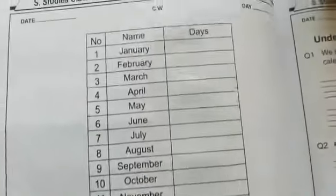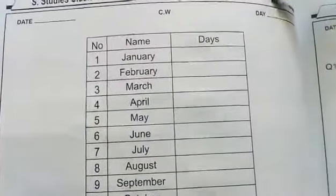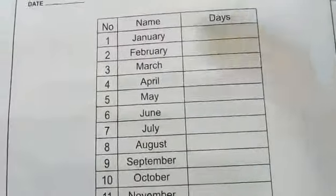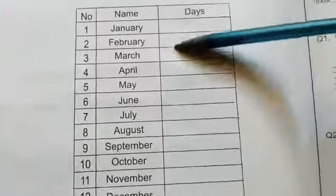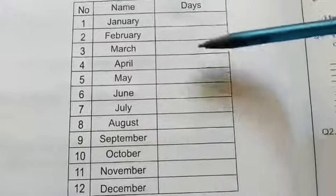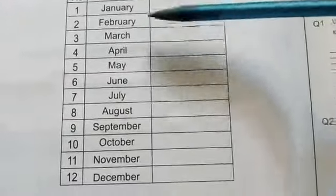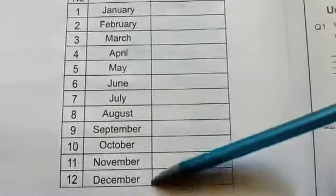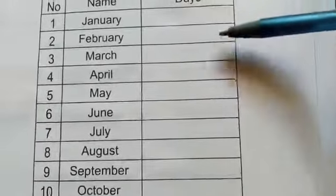Now students, open your workbooks. Open page number 45 and write down the date and day first. You have a table here — you have to write the days in respective months, how many days are there.